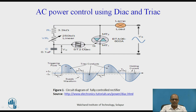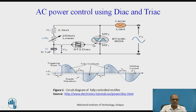This is the circuit diagram of AC power control using DIAC and TRIAC, and this is the waveform for load voltage. The input is 230 volt AC, 50 hertz. A lamp is used as a load. TRIAC is a bi-directional device which conducts in forward bias as well as reverse bias, and TRIAC is a power device. DIAC is also a bilateral device but it is a low power device, and DIAC is used to trigger the TRIAC. In series with the lamp, there is fixed resistance R1, potentiometer VR1, and capacitor C.